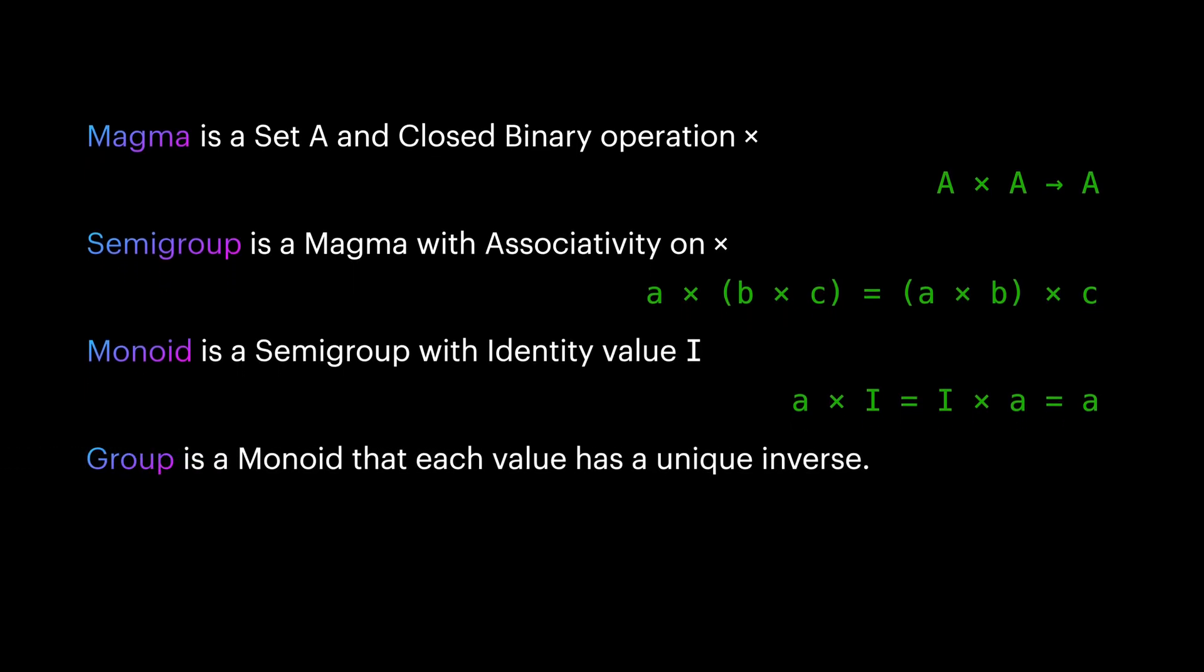Group, which is the topic of this video, is a monoid in which each value in the set has a unique inverse. This means if we pick any value like A from the set, there is another value A' which multiplying A and A' returns the identity value.